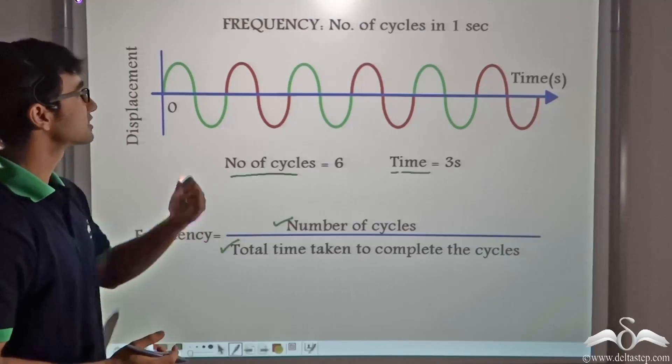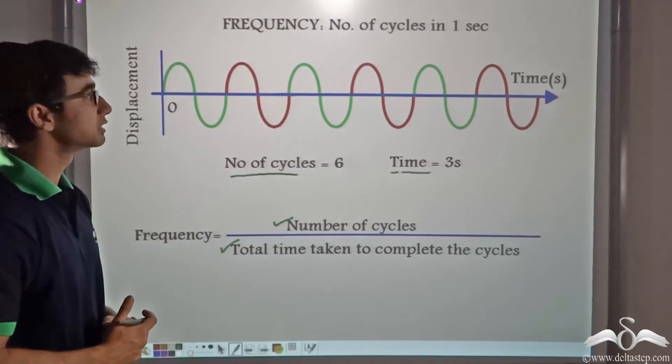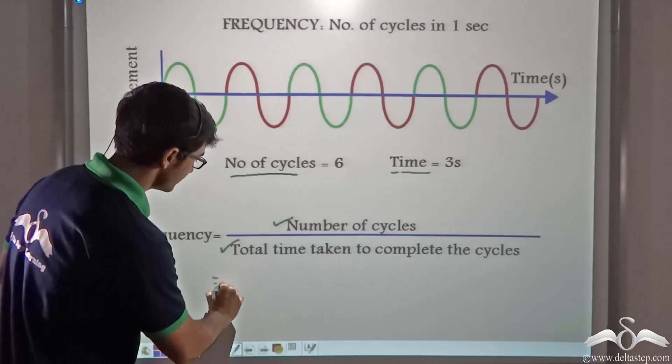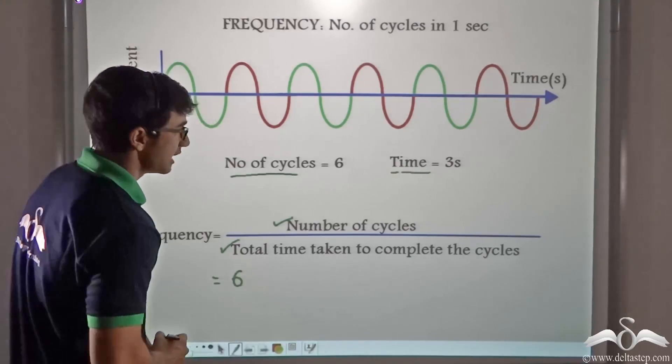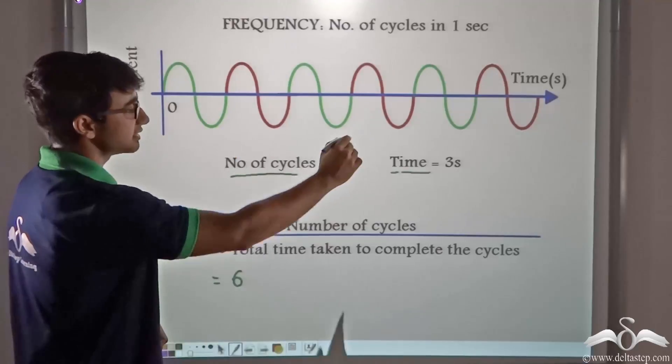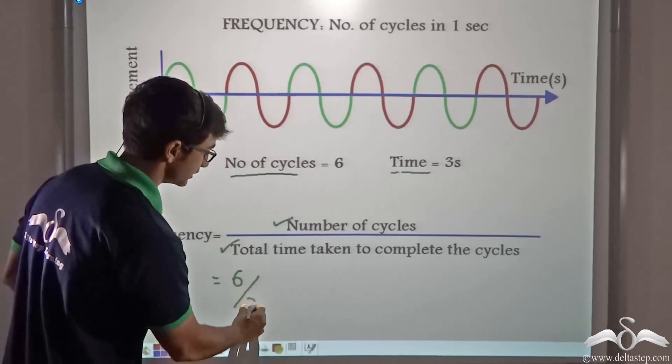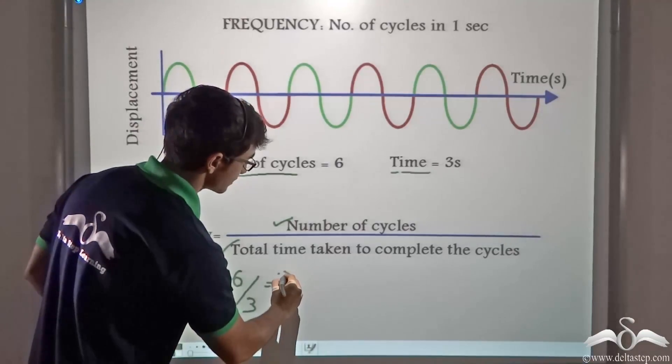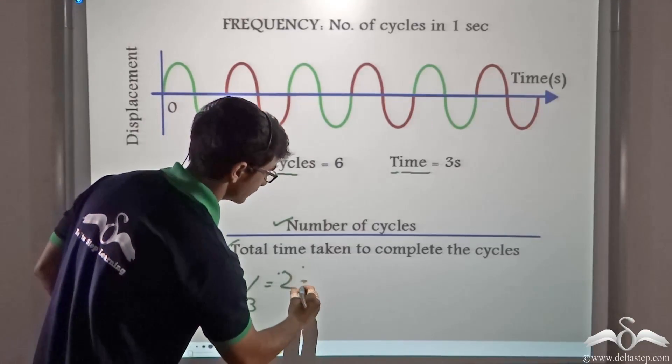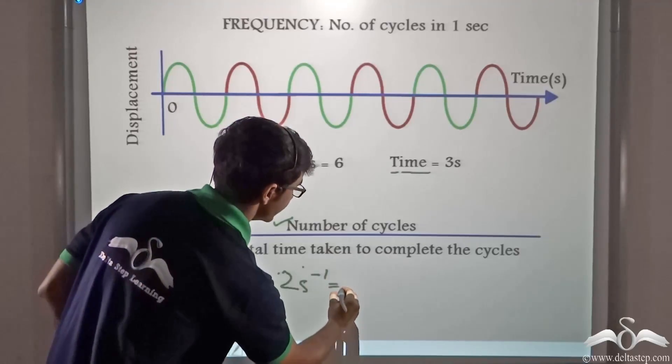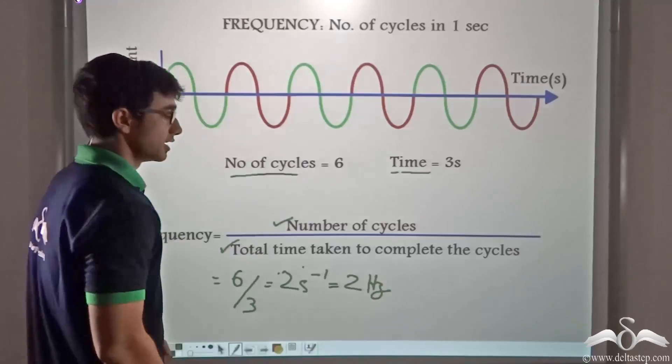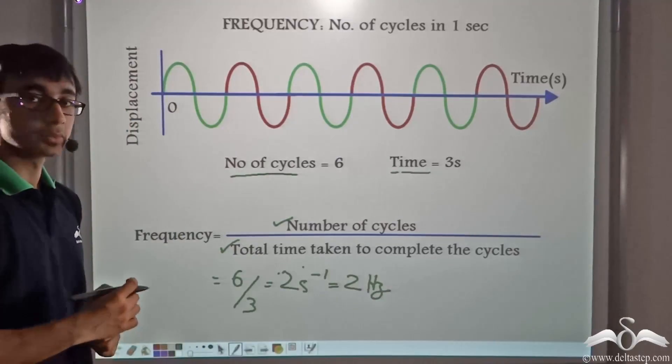So can you tell me what is the frequency of the wave given in the picture? In this case, the number of cycles is six and the time taken to complete these six cycles is three. So the frequency is two cycles per second or it is two Hertz. Hertz is the unit of frequency.